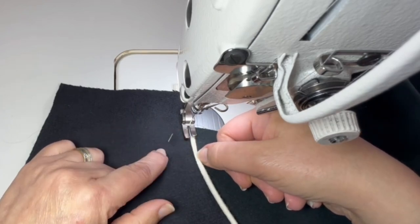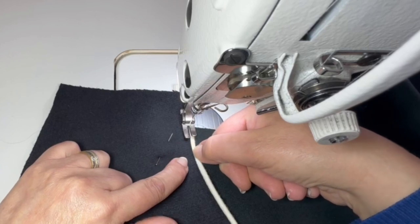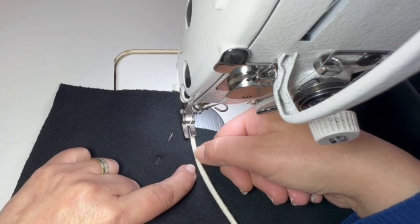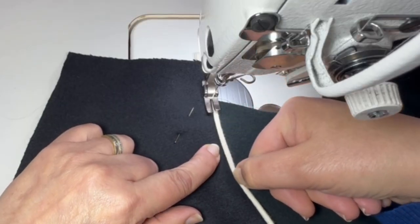I'm not stitching on the piping cord. I'm not stitching on the black fabric. I'm stitching on the stitch line that I originally sewed the black fabric to the white fabric. Stitching in that ditch that has been created.